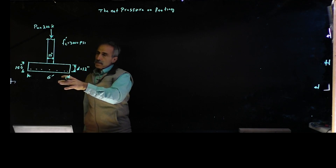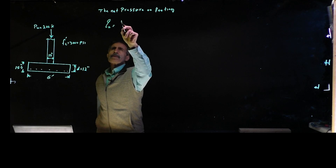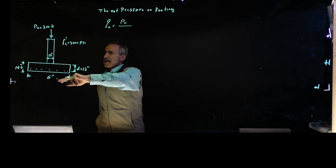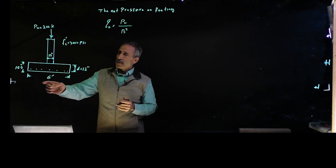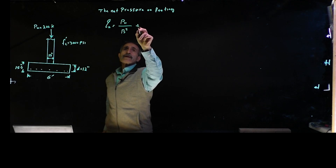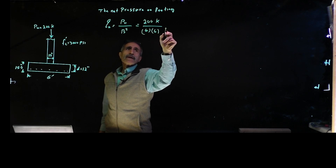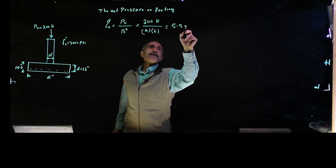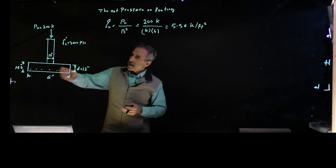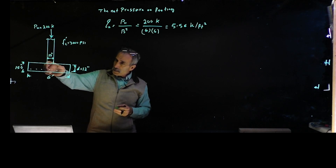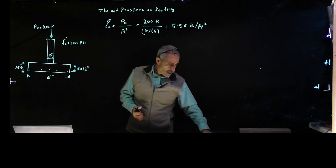First we're going to calculate the net factored pressure on the footing. QU equals PU divided by the area, which is B squared because our footing is square — or B times L if it weren't square. So that's 200 kips divided by 6 feet by 6 feet, which gives us 5.56 kip per square foot. Now, the column is on top of this footing and it can punch a hole in it, so we're going to look for punching shear.